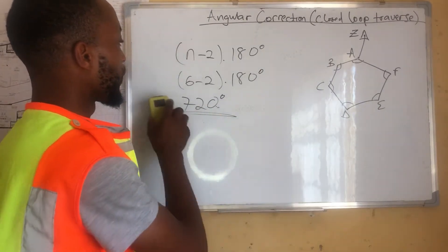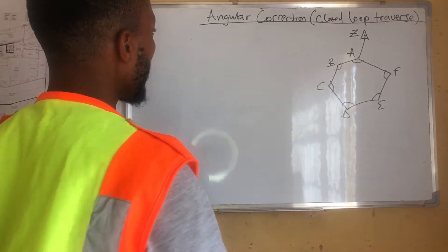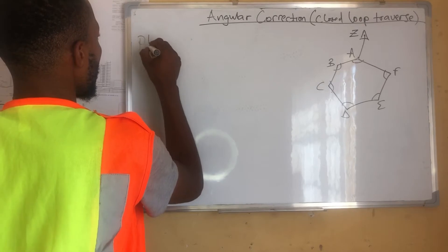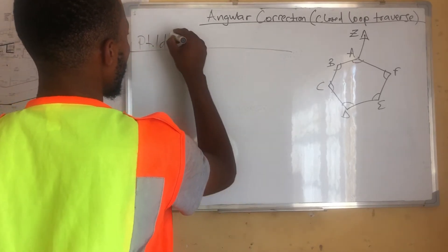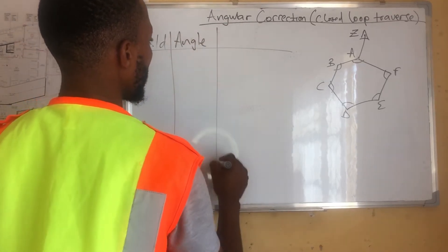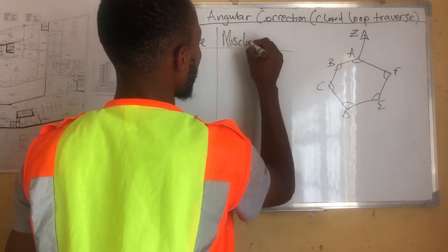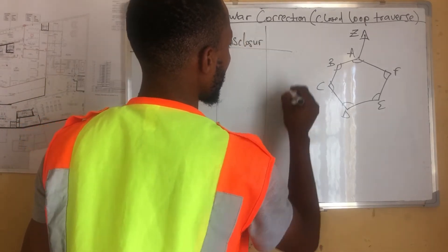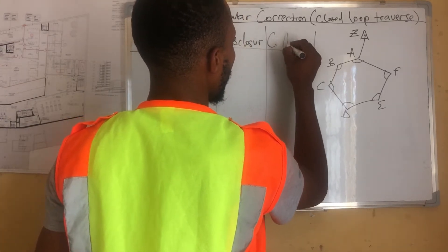In this case, we are given our angles. Our angles, let's say that's the point ID, that's the point name. Angles, angle. The misclosure, misclosure.